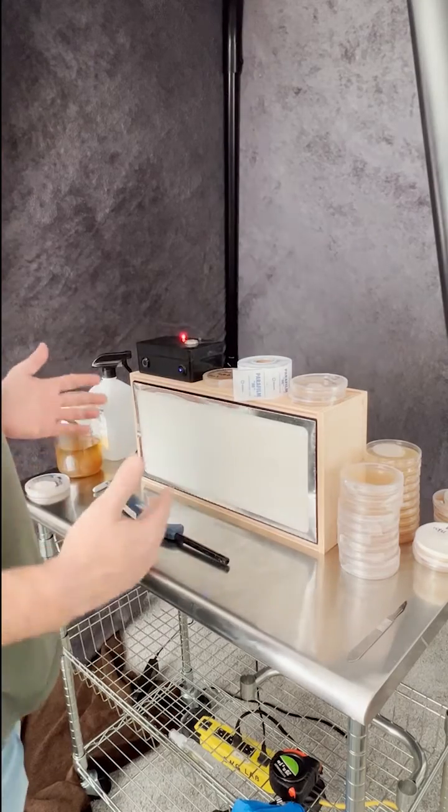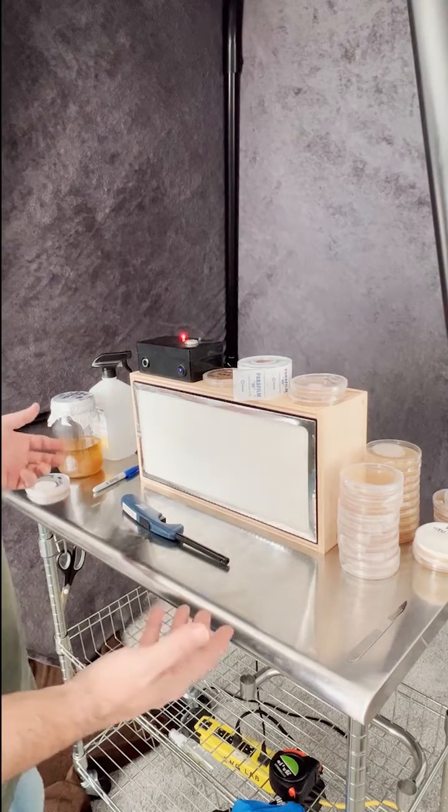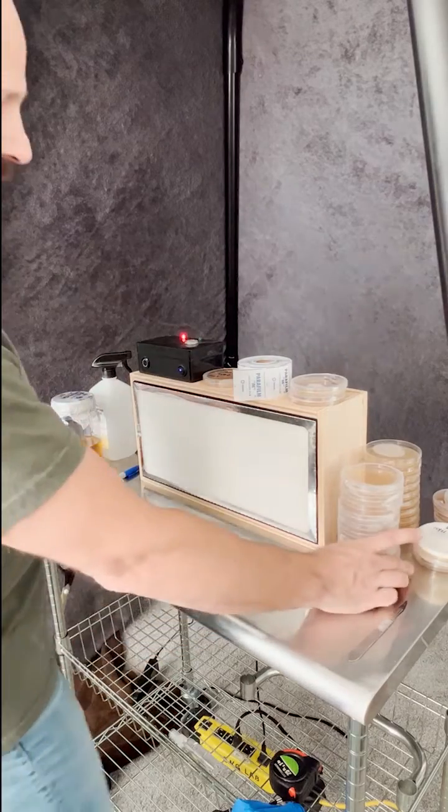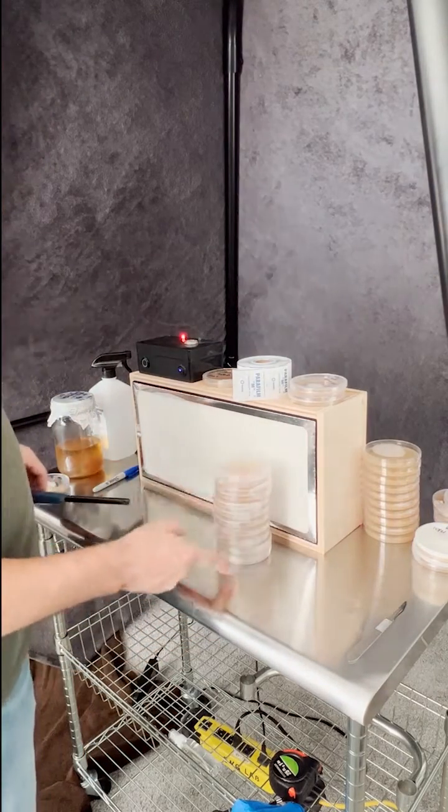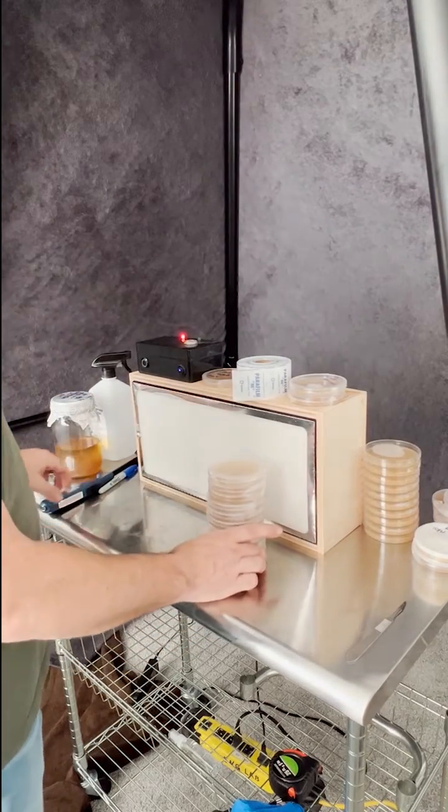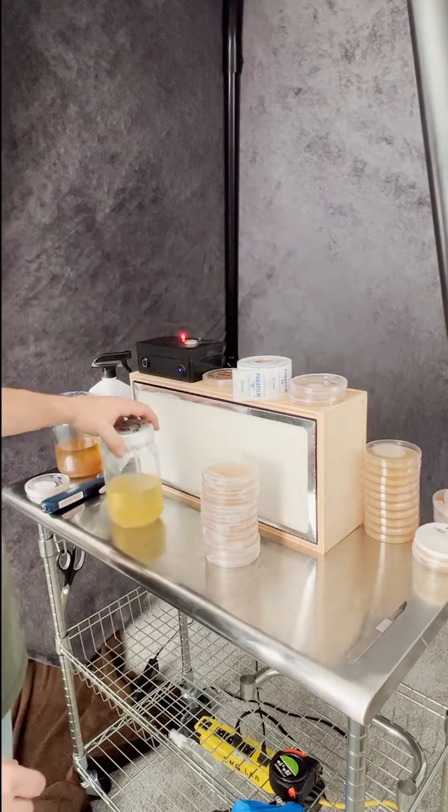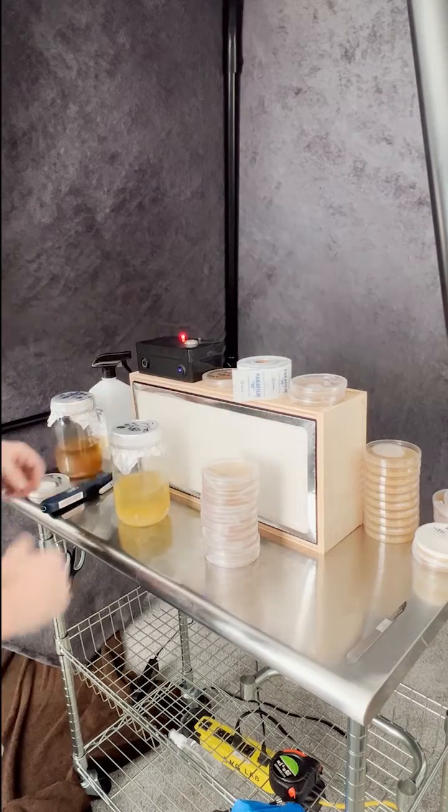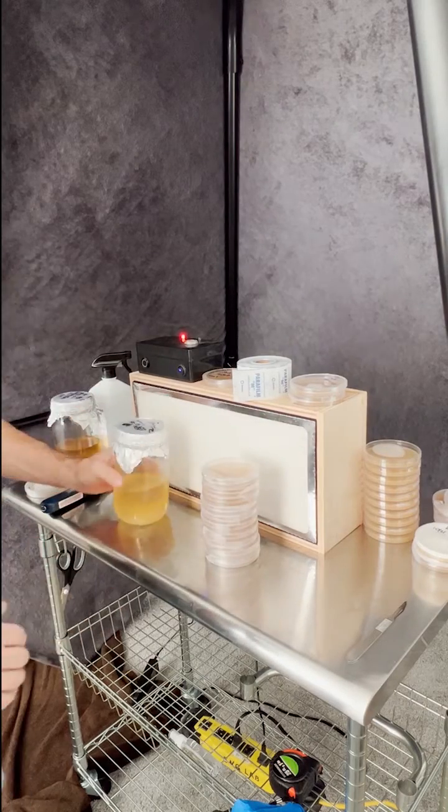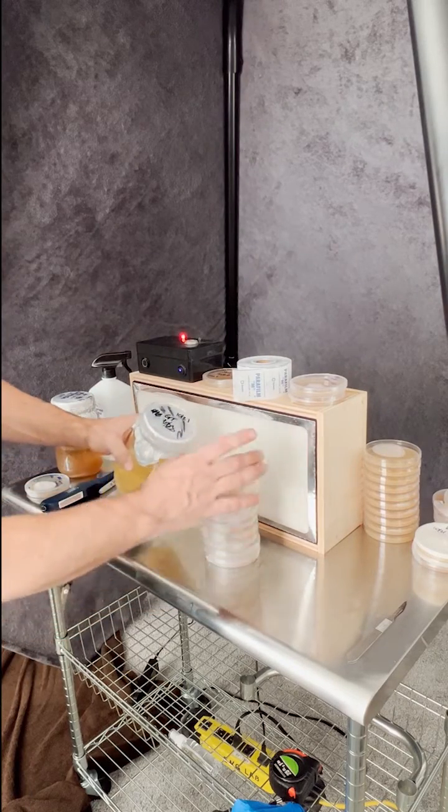When you're getting a flow hood, there's a few things that I look for. Number one is do you have space to work in front of it. You can see there's 10 agar plates right there. If you were pouring agar out of a quart jar, you've got enough room for your quart jar to sit in there and be in all the clean air.